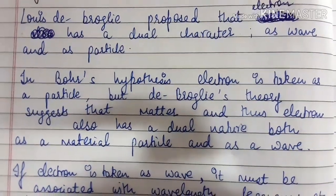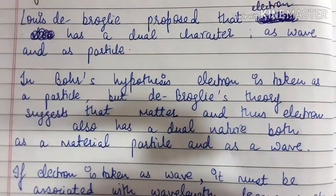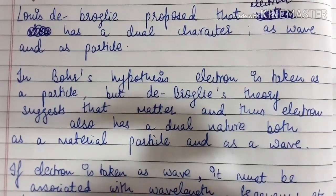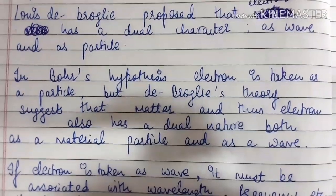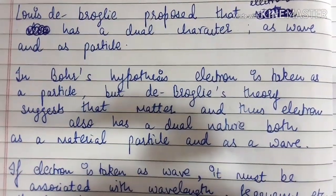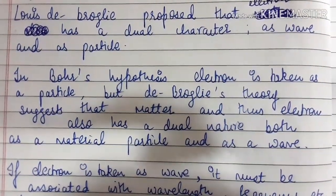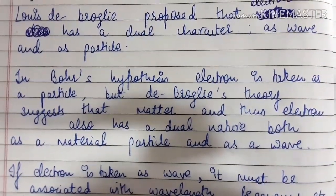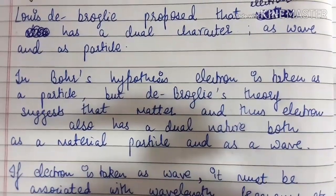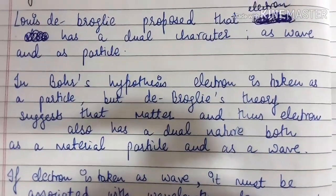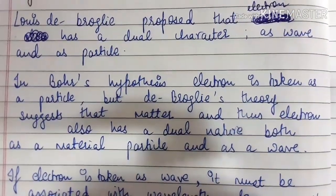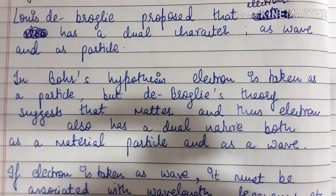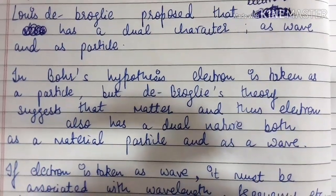Today's topic is the de Broglie hypothesis or the de Broglie equation. Louis de Broglie proposed that the electron has a dual character — as a wave and as a particle.